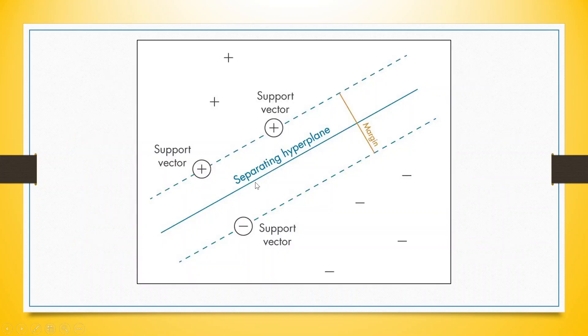You can see here that we are having two classes indicated by plus and minus. We want to pass a plane which can clearly differentiate between the two classes. This plane is known as a hyperplane.